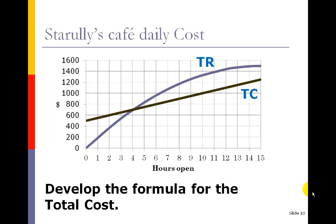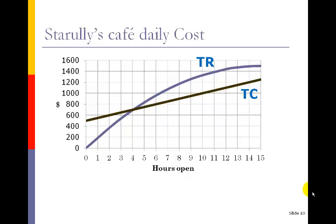Alright, so for an example here, I'm looking back at Starouli's. And what I want to do is develop a formula for the total cost, and it's a nice straight line, so it's looking like we should come up with a formula for that. The formula that I did come up with is 500 plus 50t. I've got an initial value of 500 and a slope of 50. How did I get that? I looked at the graph and I found two key points.